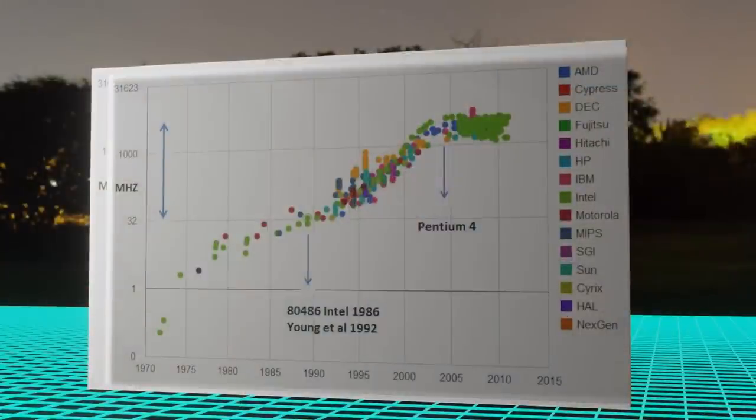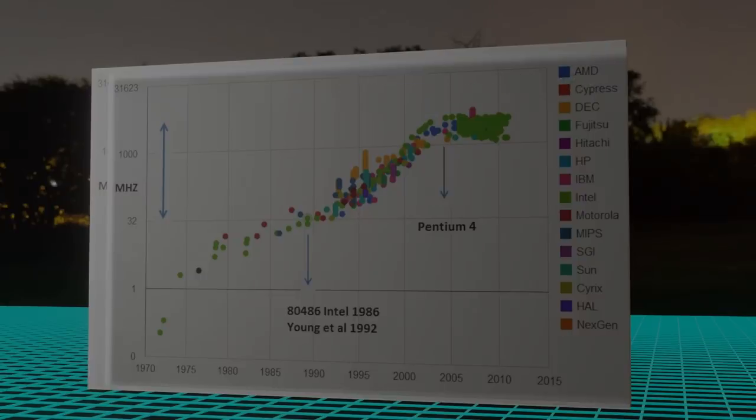We can't increase the clock speed indefinitely — it really hits a bit of a wall, and we hit that wall back in 2010 or probably even before then. The core clock speed levels out at around 3 or 4 GHz generally. So in order to keep gaining speed, what CPU manufacturers did was start to introduce more and more parallelism. And it's that which makes modern CPUs so much faster at number crunching than older hardware.